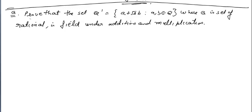See the question: prove that the set Q' — what kind of set is it? It contains all such elements of the form a + √2·b, where a and b belong to Q. Here Q is the set of rationals. And we have to prove that this set is a field.